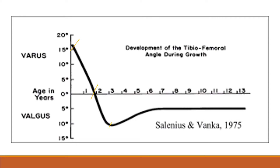By the age of 7 years, the angle reaches the normal adult valgus tibiofemoral angle of 6 degrees. That is the normal development of the tibiofemoral angle during growth.